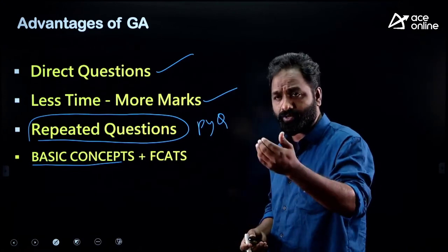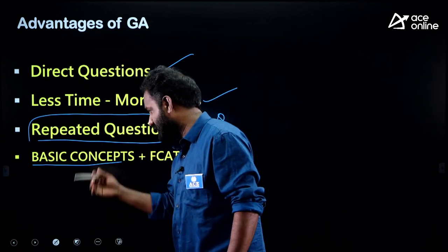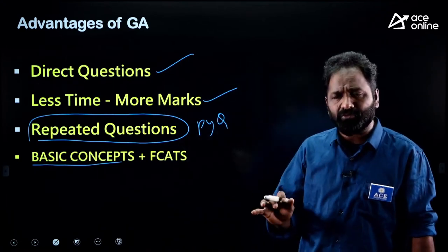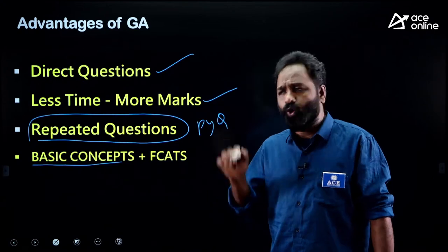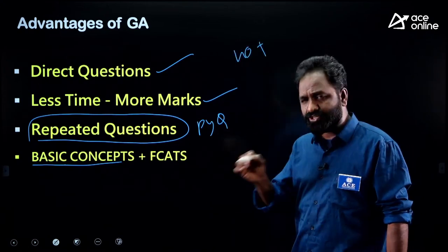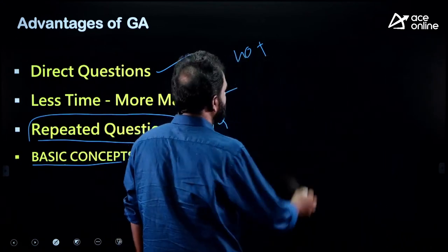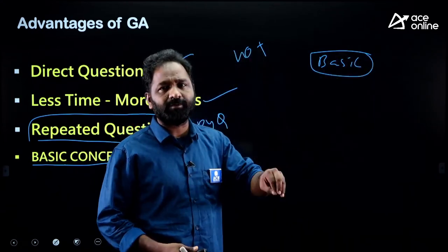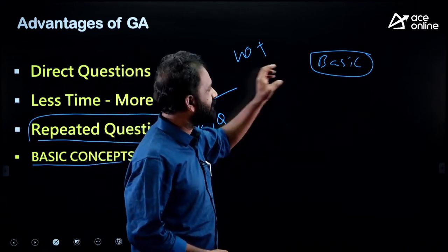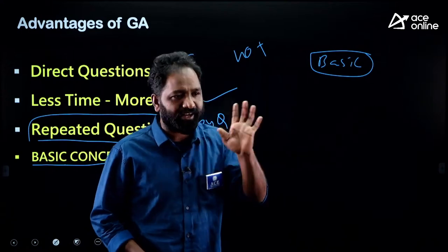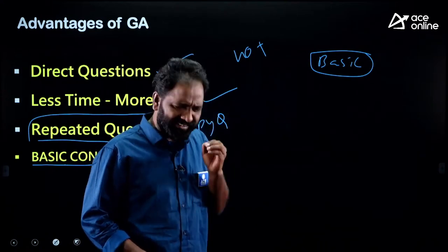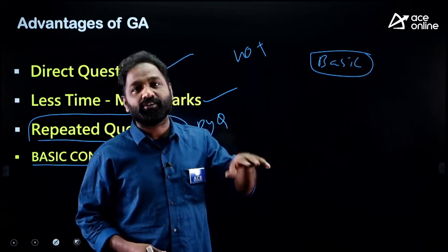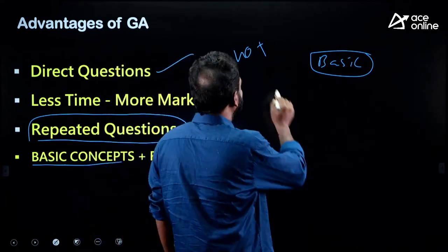Most questions — whether Polity, Economy, Geography, Science and Technology, Biology, Physics, or Chemistry — are on very basic concepts. Any person who wants to get 40 plus marks in General Awareness should focus on basics only. For example, in Biology: what is DNA, what is RNA, what is a cell, what are the parts of the cell — that's it. Read carefully and know each and every basic detail.